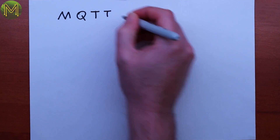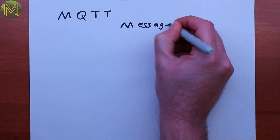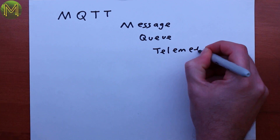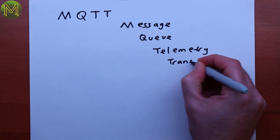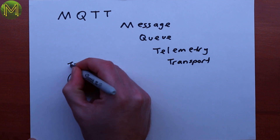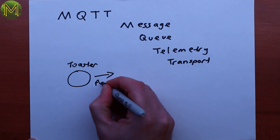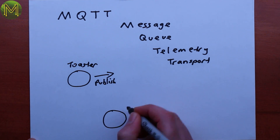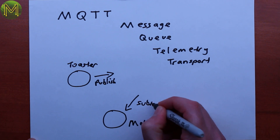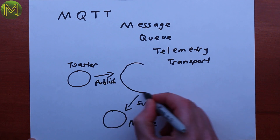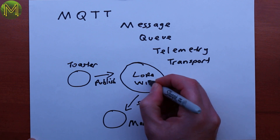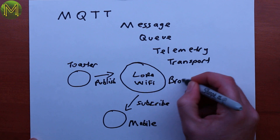So what is MQTT? MQTT stands for Message Queue Telemetry Transport, and is a publish-subscribe communication framework which allows embedded devices and applications to communicate freely with each other across low bandwidth networks using a broker.